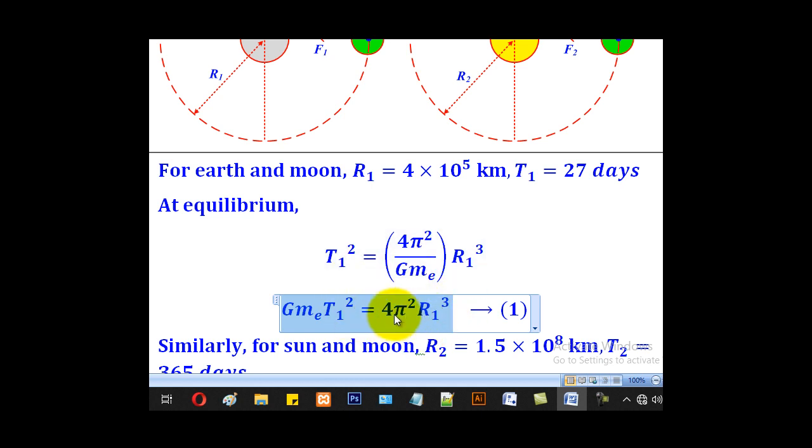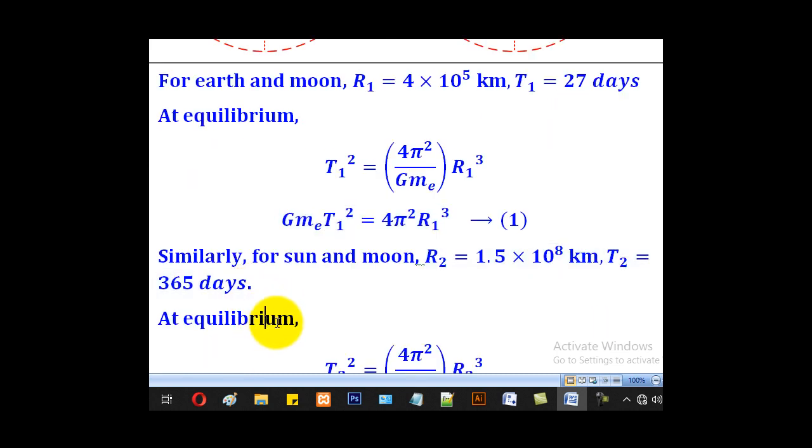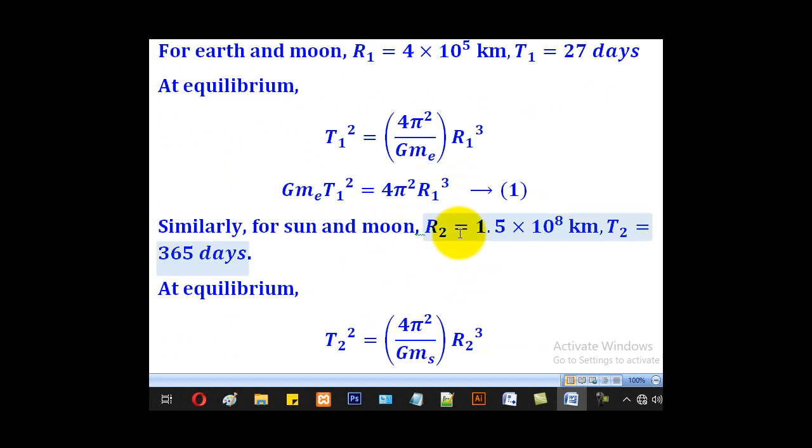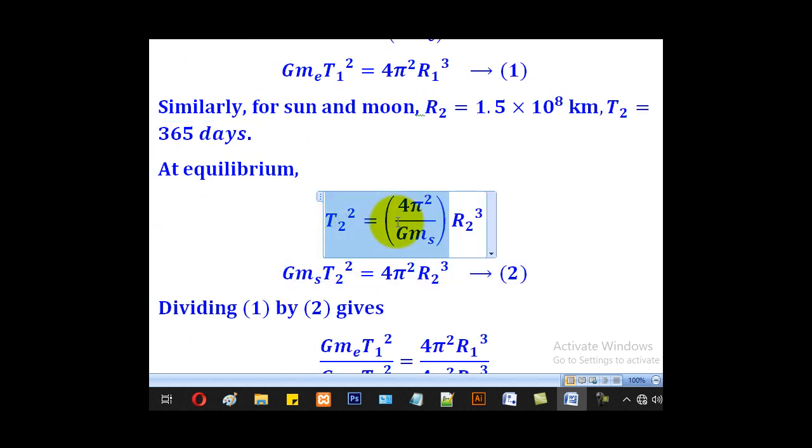We shall first leave it as an equation and go to the second part of the Sun and the Moon. With the Sun and the Moon you have r₂ and you have the period. We still use the same equation, cross multiply and get this equation. So that we have now 2 equations.